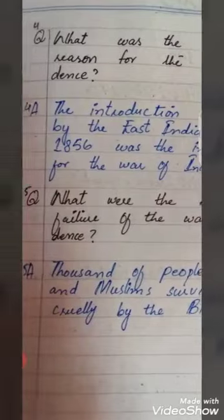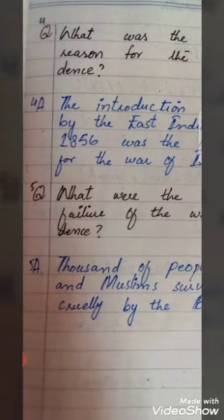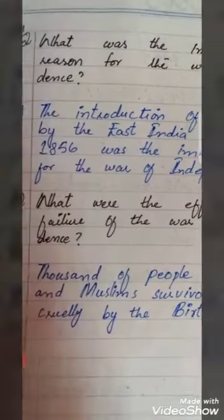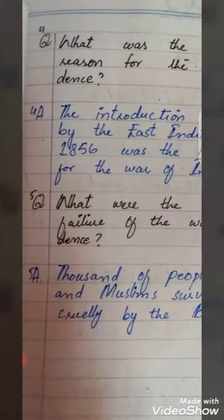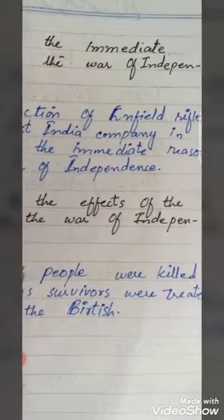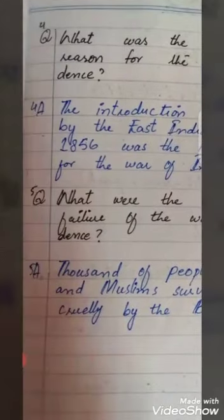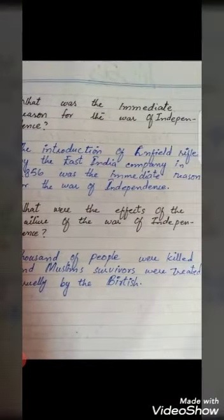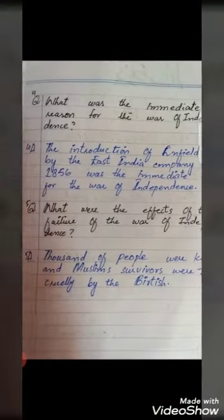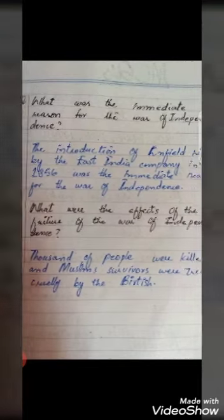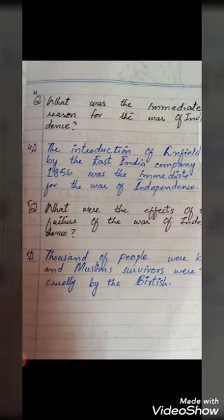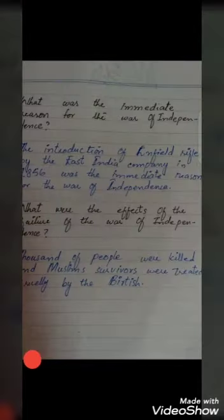Question number five: What were the effects of the failure of the war of independence? Answer: Thousands of people were killed and Muslim survivors were treated cruelly by the British.